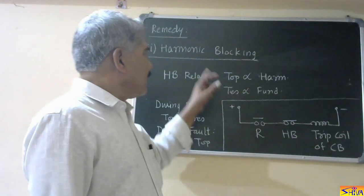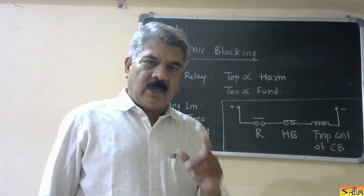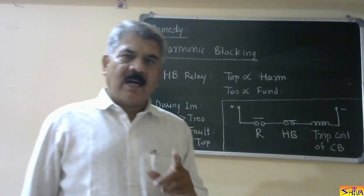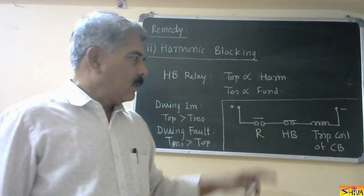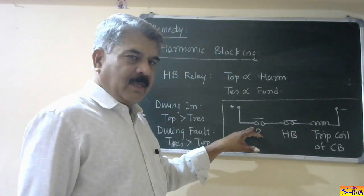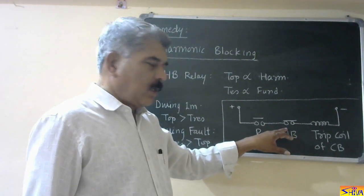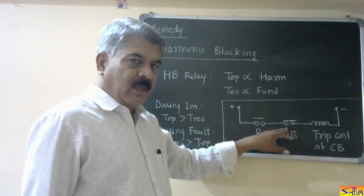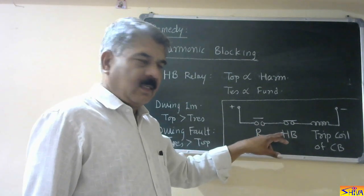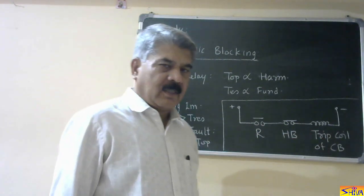The second practical method is the harmonic blocking relay. An additional relay called the harmonic blocking relay is used. In the trip circuit, R is the main relay with a normally open contact. The harmonic blocking relay has a normally closed contact. These are connected in series with the trip coil of the circuit breaker.